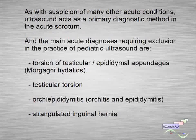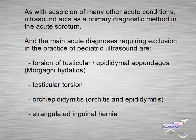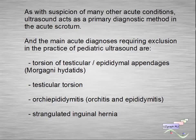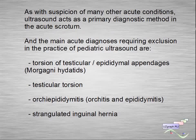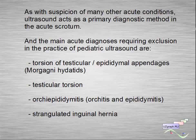As with suspicion of many other acute conditions, ultrasound acts as the primary diagnostic method in acute scrotum. The main acute diagnoses requiring exclusion in the practice of pediatric ultrasound are torsion of the testicular epididymal appendages, Morgani hernia, testicular torsion, epididymitis, orchitis and epididymitis, and strangulated inguino-scrotal hernia.